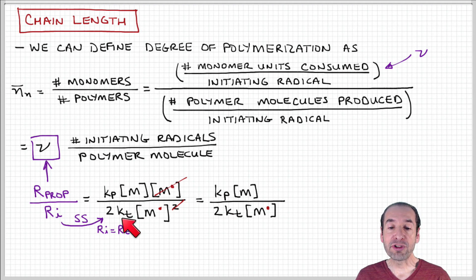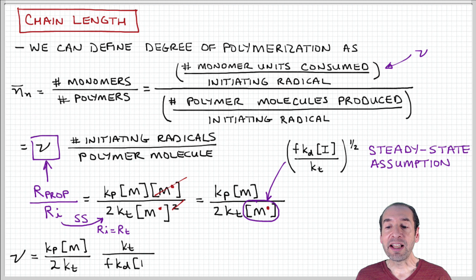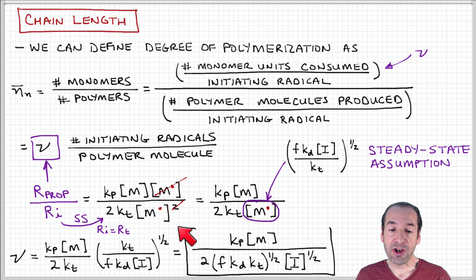This is two times the overall termination rate constant times the quantity of active chains squared. So I end up with this equation when I simplify, and now I know an expression for the concentration of active chains. I got this when we did our kinetic analysis and imposed the steady state approximation. That was key to allowing us to obtain an expression for this term. So when I substitute in for this term and simplify,